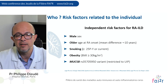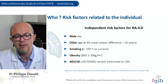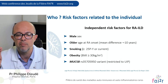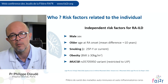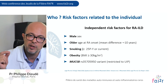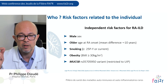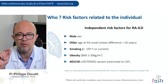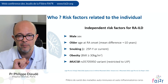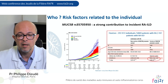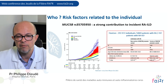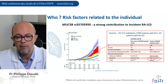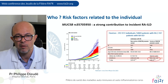Here are the risk factors related to the individual identified as independent risk factors for RA-ILD: male sex; older age at RA onset, with a mean difference close to 10 years between patients with RA-ILD compared to patients without RA-ILD; smoking; obesity; and carrying the risk factor MUC5B, which is a genetic variant. This association is restricted to the UIP HRCT pattern. MUC5B is also a strong risk factor for incident RA-ILD, as coming from the Fingen study, with an ASR ratio for patients carrying the risk factor close to 10.